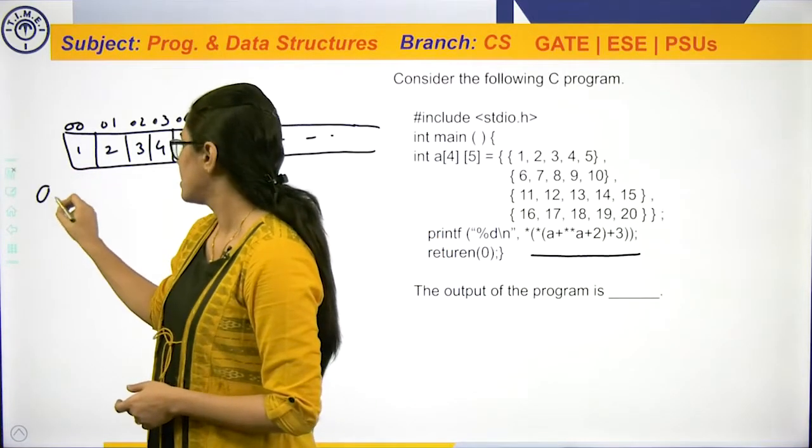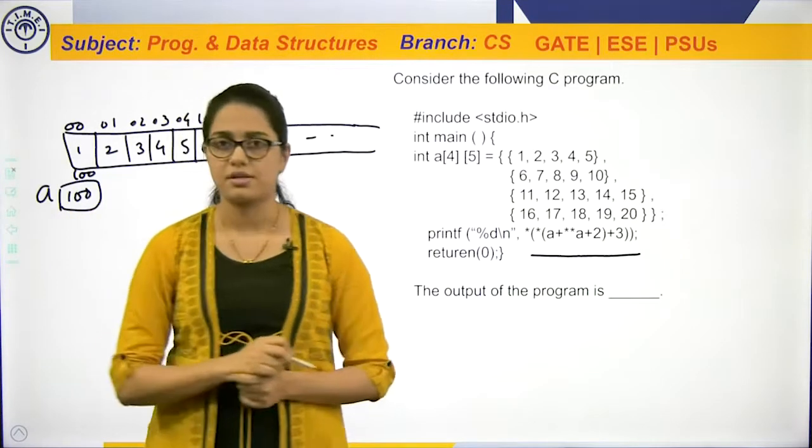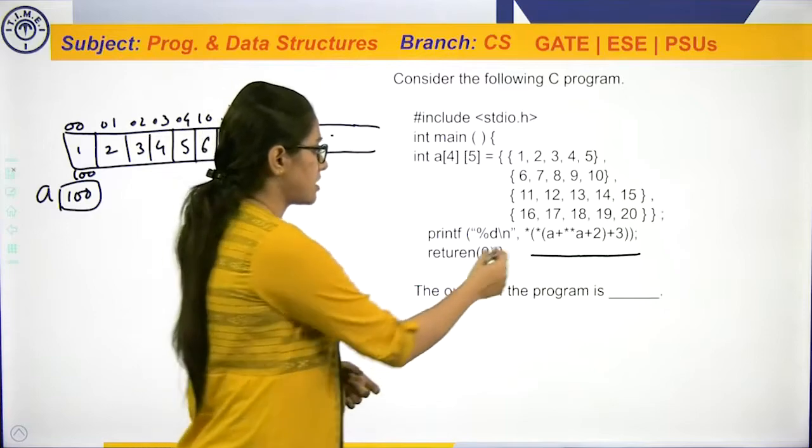So, this is A. A is holding the base address. Let us consider 100 is a base address. Now, see the expression.